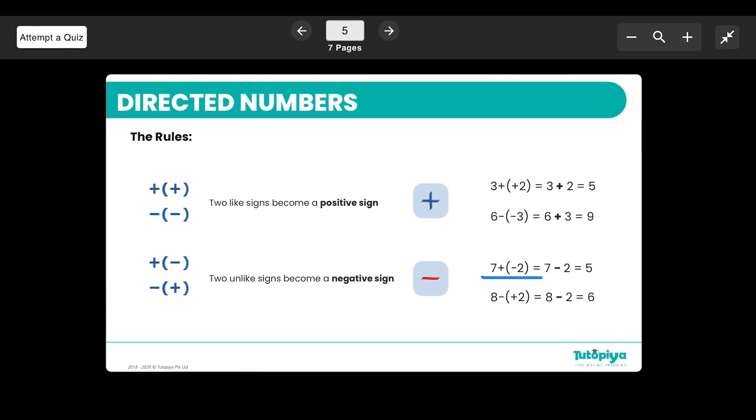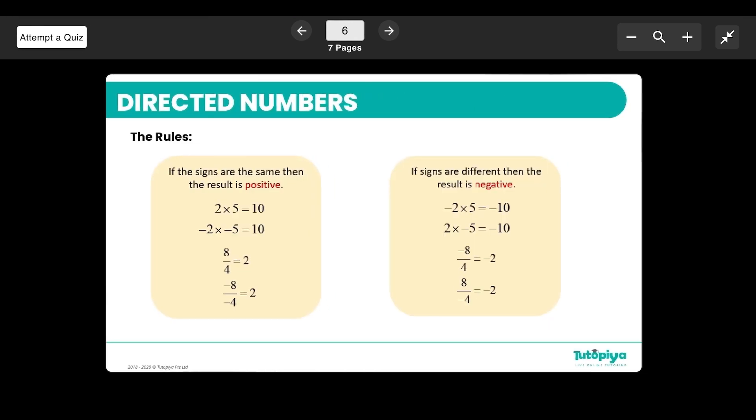For example, 7 plus negative 2 is the same as 7 subtract 2, which is 5. Or 8 subtract positive 2 is the same as 8 subtract 2, which is 6. That's a basic introduction to directed numbers.